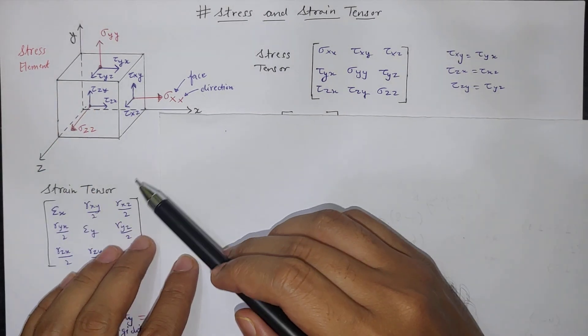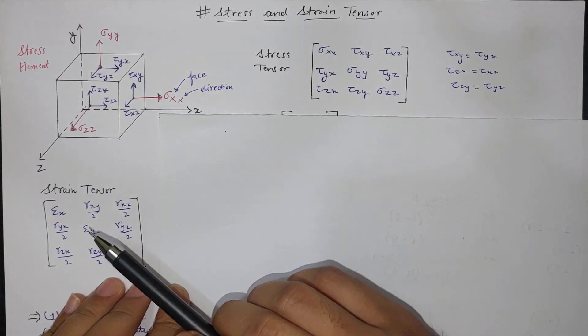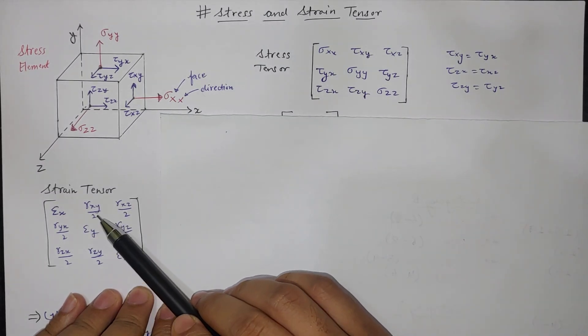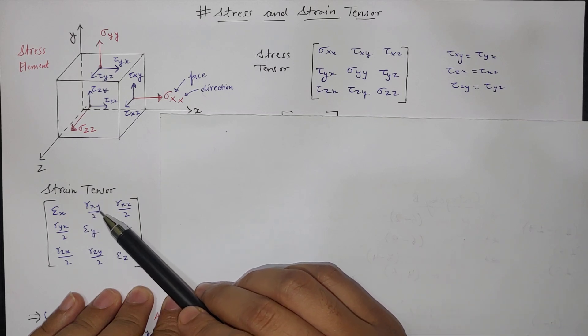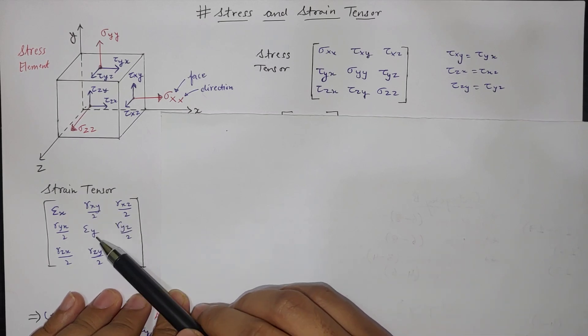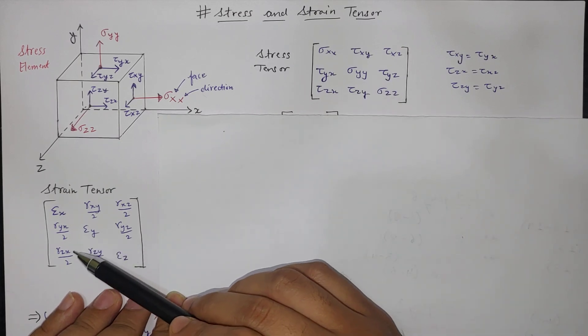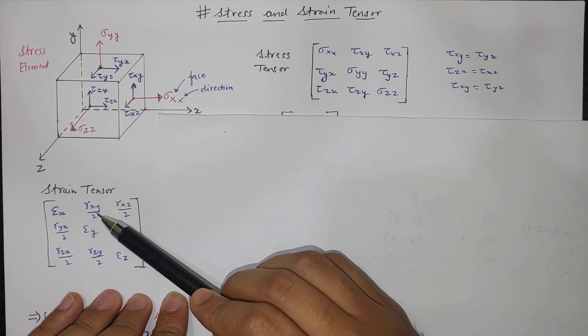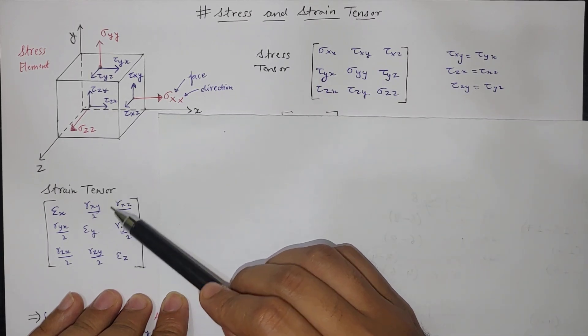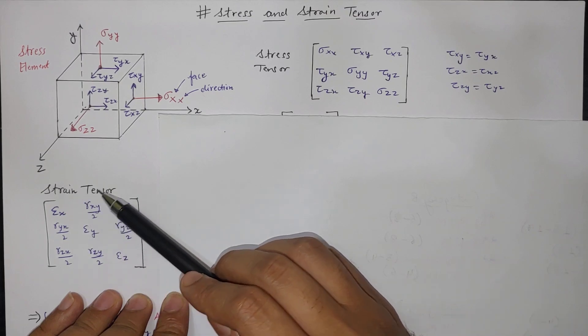Now if you define a strain tensor then similarly to this we have to define but here just shear strain has to be divided by 2. So all other parameters are same, just normal stress to normal strain and shear stress to shear strain divided by 2. So this is how we have to define strain tensor.